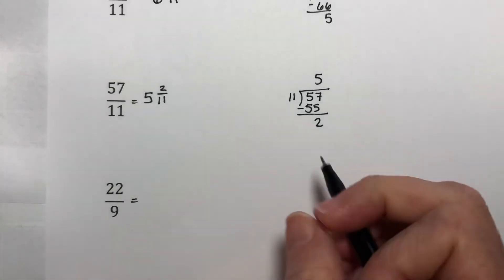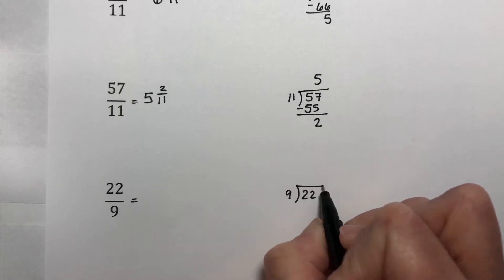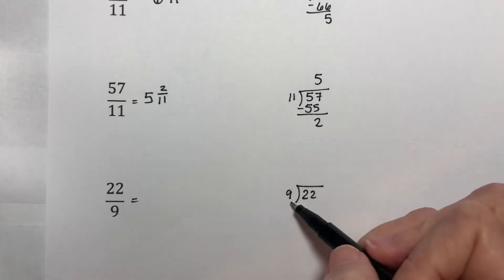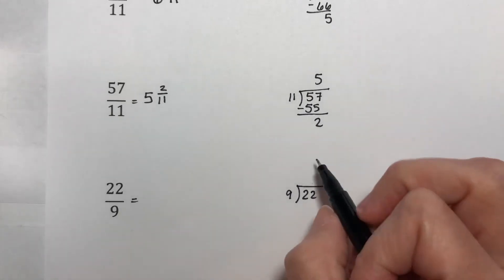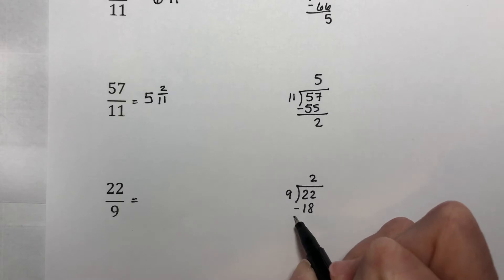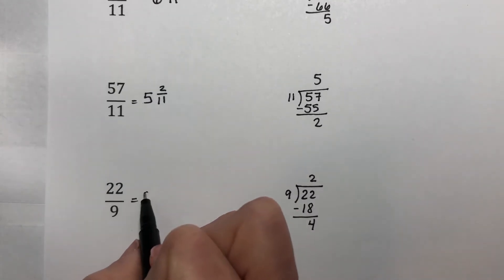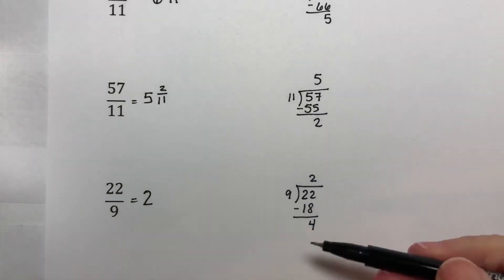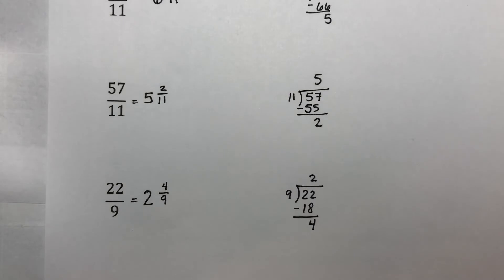22 ninths. 9 divided into 22. 9 times 3 is 27, so that's too big. 9 times 2 is 18. So subtract away here, and you get a 4. So this is 2. It goes in 2 times completely with 4 left over.